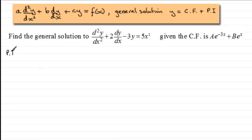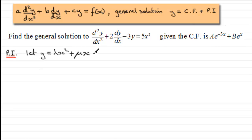For the particular integral — when we're dealing with quadratic types — our particular integral takes the form: let y = λx² + μx + α. You can choose any constants as long as they're not the same as those already used. In the usual way, we now differentiate.